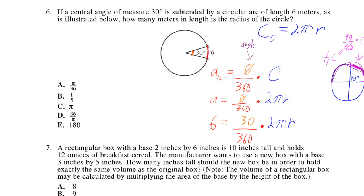And then we'll just have to solve it for r. So now we can simplify this, 30 over 360 becomes 3 over 36. 3 over 36 becomes 1 over 12.